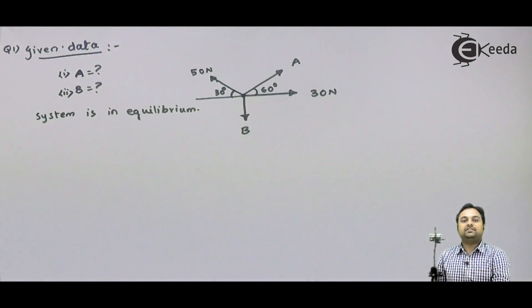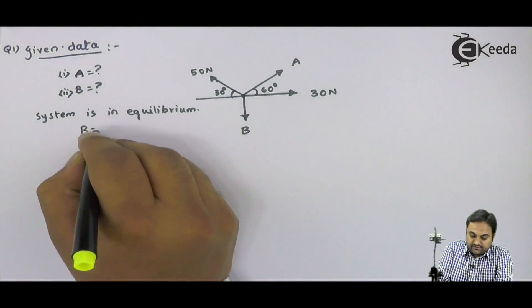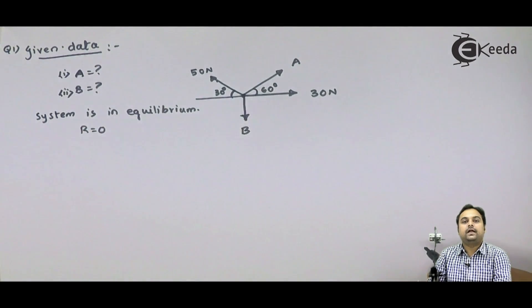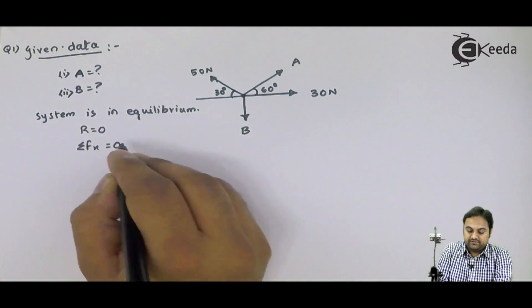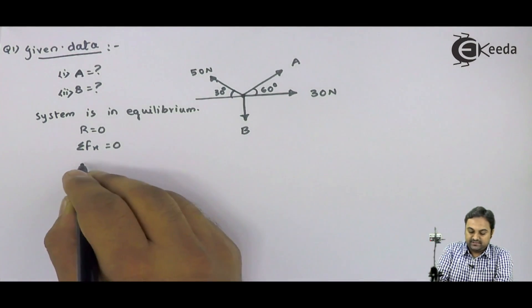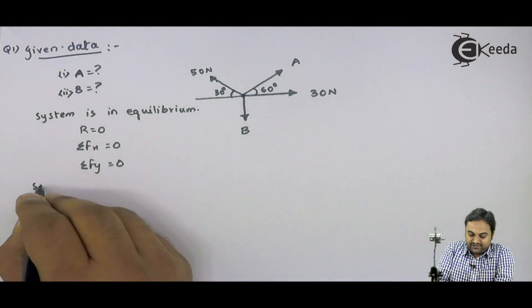If system is in equilibrium, the resultant is 0, and if resultant is 0 then the sum of all horizontal forces will be 0, and sum of all vertical forces also would be 0. Now, with this much data given, let us try to solve the problem. I will read the solution.